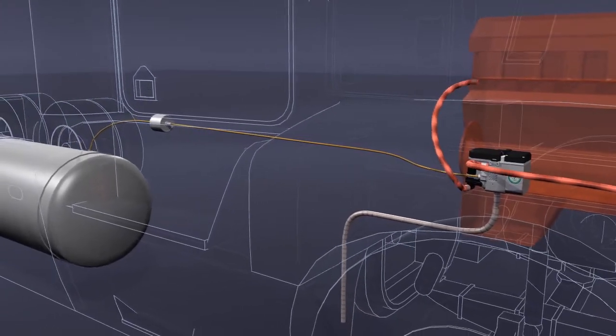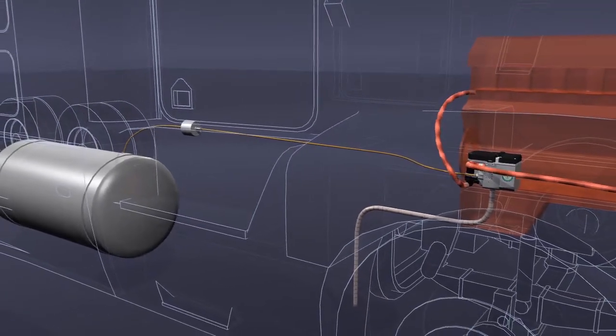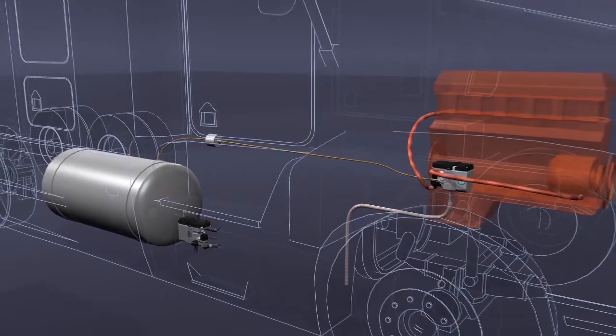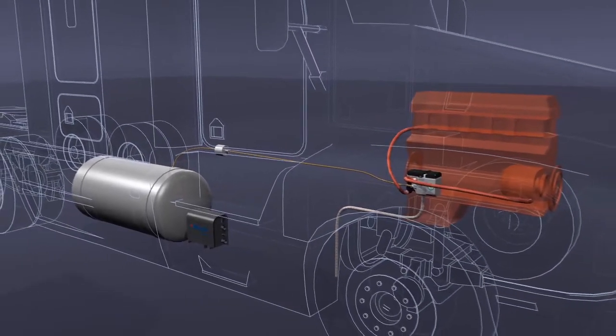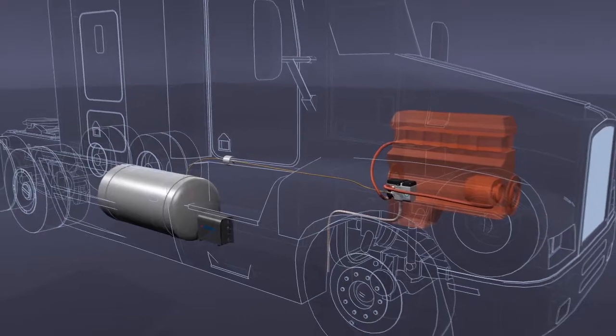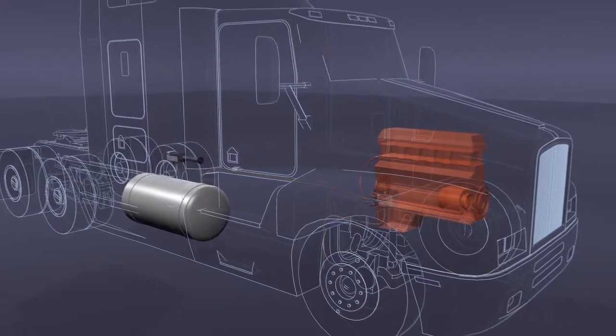A Webasto coolant heater can be mounted inside the engine compartment or on the truck's frame rail in a protective enclosure box. It can be used as a standalone solution or in conjunction with the Webasto air heater to create the ultimate heating system.